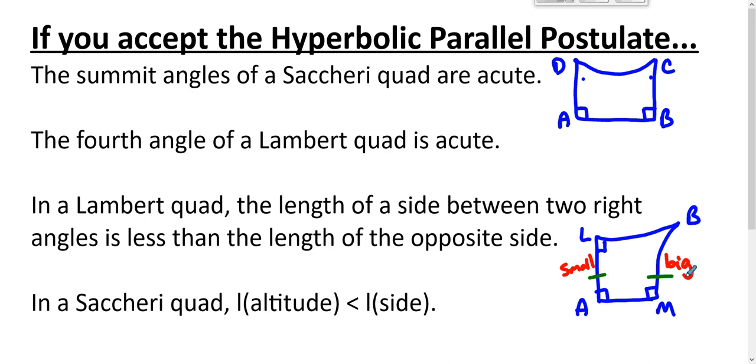If LA equals MB, then this is a Saccheri quad—two congruent sides, two right angles. And if this is a Saccheri quad, then that's a right angle. And if that's a right angle, you've got a rectangle. Rectangles don't exist in hyperbolic geometry. So that means in a Lambert quad or an Ibn al-Haytham quad, the length of a side between two right angles is less than the length of the opposite side.